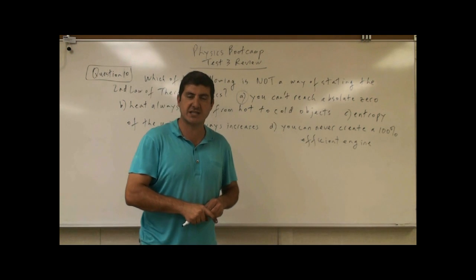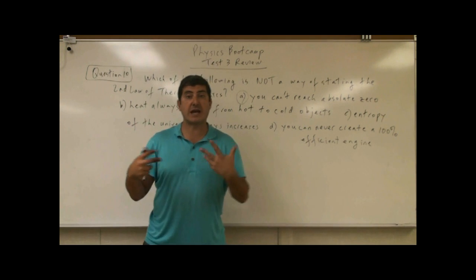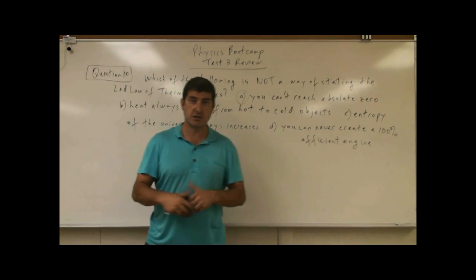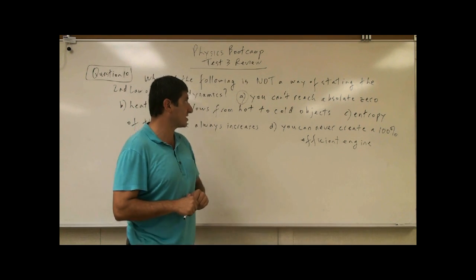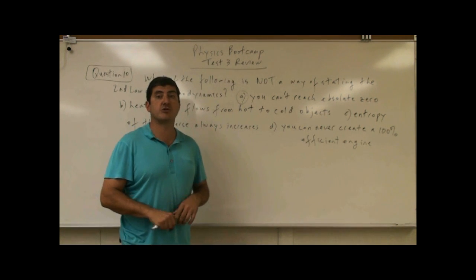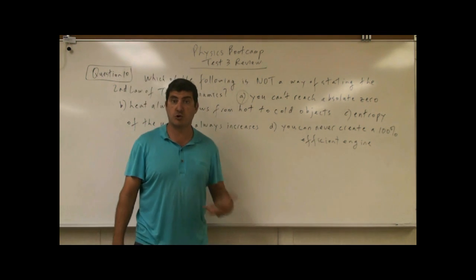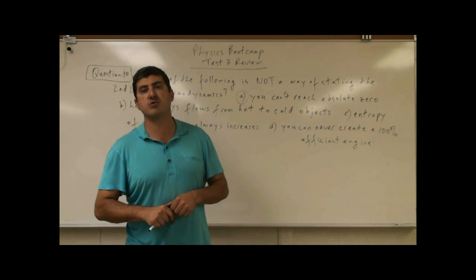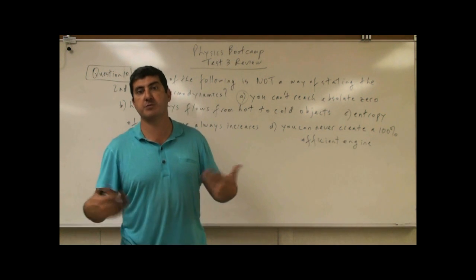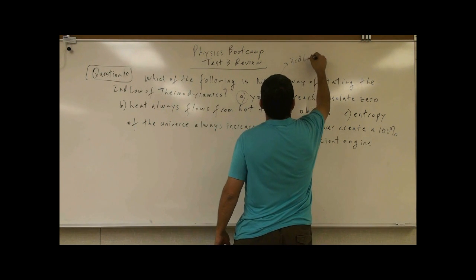The third law of thermodynamics says that when an object reaches absolute zero, in a classical understanding of physics, the entropy becomes zero. You can't have entropy of zero — all molecular motion stops. And you can never reach absolute zero because the entropy goes to zero. So that is actually the third law of thermodynamics.